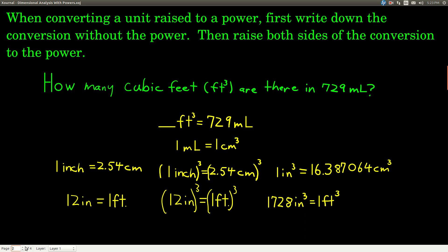All you do is first write down the conversion that you know without the power. So you write down 1 inch = 2.54 centimeters, for example, and then you raise both sides of that conversion to whatever the power is that you're dealing with. In that case, you'd cube both sides. So let's look at an example. We want to convert 729 milliliters to cubic feet. The question is how many cubic feet are there in 729 mL?